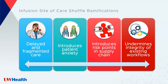The infusion site of care 'shuffle' and payer restrictions — where patients aren't able to be infused at a site of choice because a third-party payer restricts it — can lead to delayed and fragmented care, introduce patient anxiety, create risk points in the supply chain, and undermine the integrity of existing workflows within health systems. So it can make things considerably more complicated.